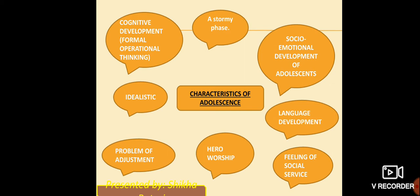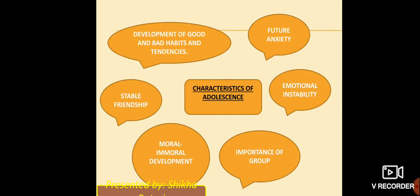Moving on to the next slide, there are some more characteristics of adolescence: development of good and bad habits and tendencies, future anxiety, emotional instability, importance of group, moral-immoral development, stable friendship, and others.